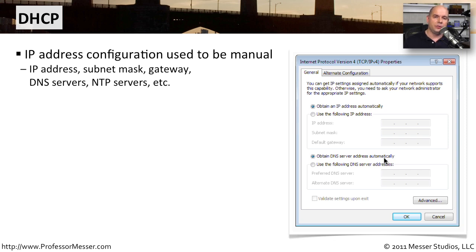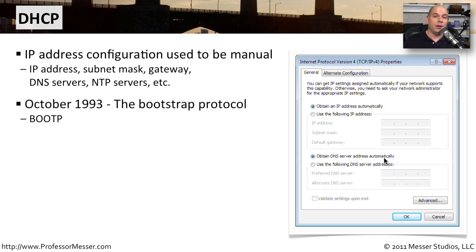We used to have to do all of our IP addressing manually — manually type in the IP address, the subnet mask, and the default gateway. There was no automated way to make this happen. In 1993, we came up with an automated way to do this: a protocol called Boot P, which stands for the Bootstrap Protocol. Boot P assigned IP addresses to workstations and filled in all of those blanks automatically, so we didn't have to manually type in or track any of that information.